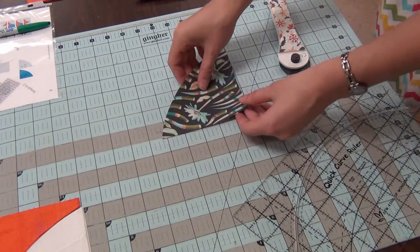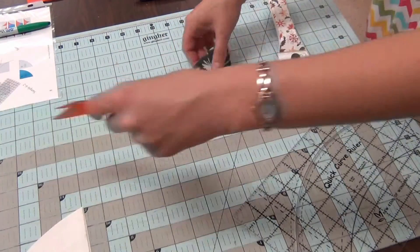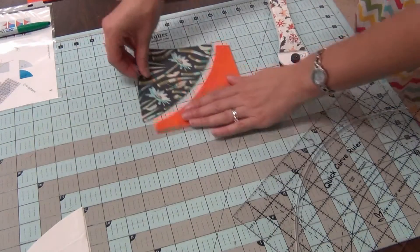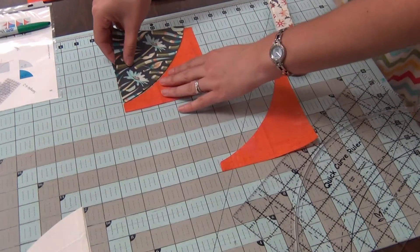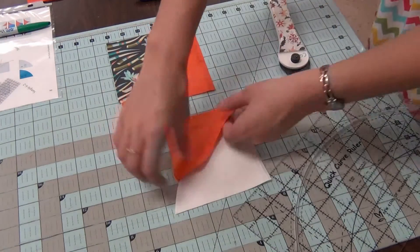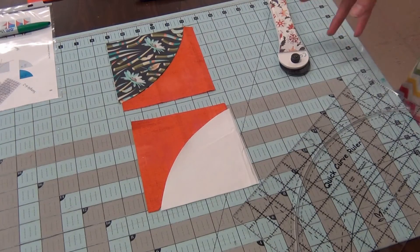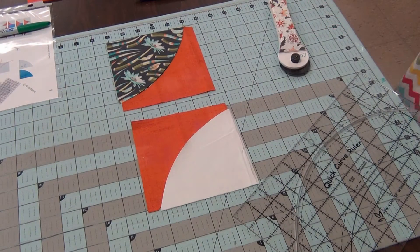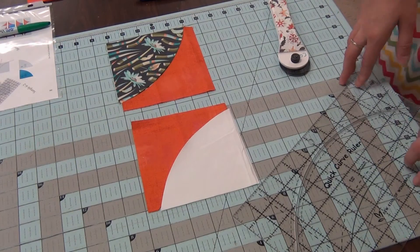So this quilt is simply half square triangles and then they'll be repositioned. So we'll sew some with our focus print and then some with our background print. So we're going to be positioning this and sewing these half square triangles and then we can turn the blocks and complete the quilt.